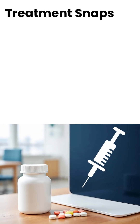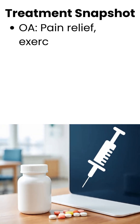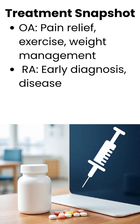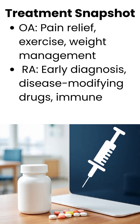Treatment snapshot: For OA, focus on pain relief, exercise, and weight management. For RA, early diagnosis is critical — treatment involves disease-modifying drugs and immune control.